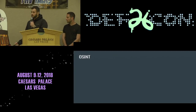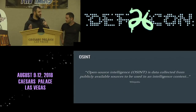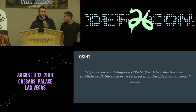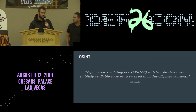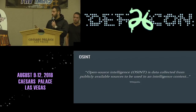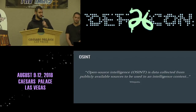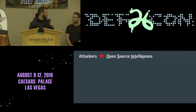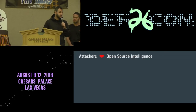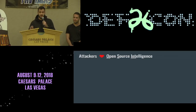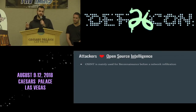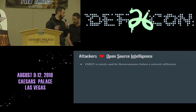So what is open source intelligence? It has a formal definition, but in general it's the concept of collecting information about your target, your objective, from publicly available resources. We all know that attackers really love open source intelligence. They use it all the time, mainly to compromise networks. They want to infiltrate the network so they begin with collecting information from OSINT.